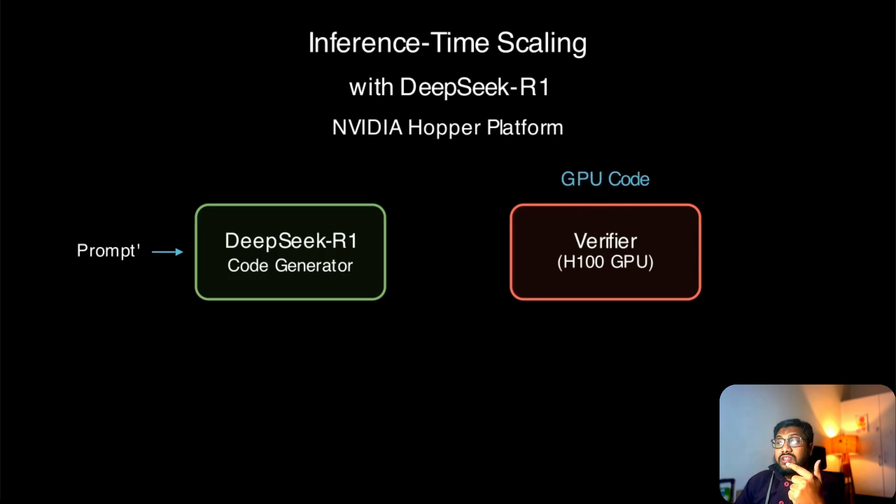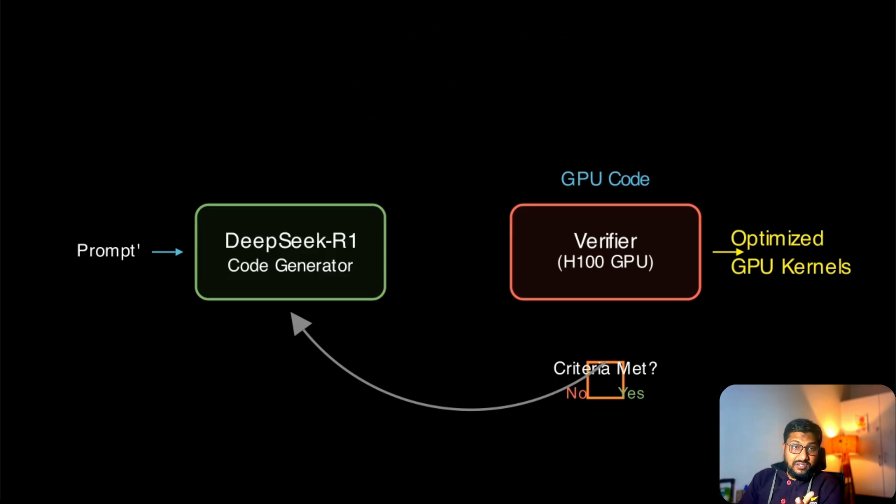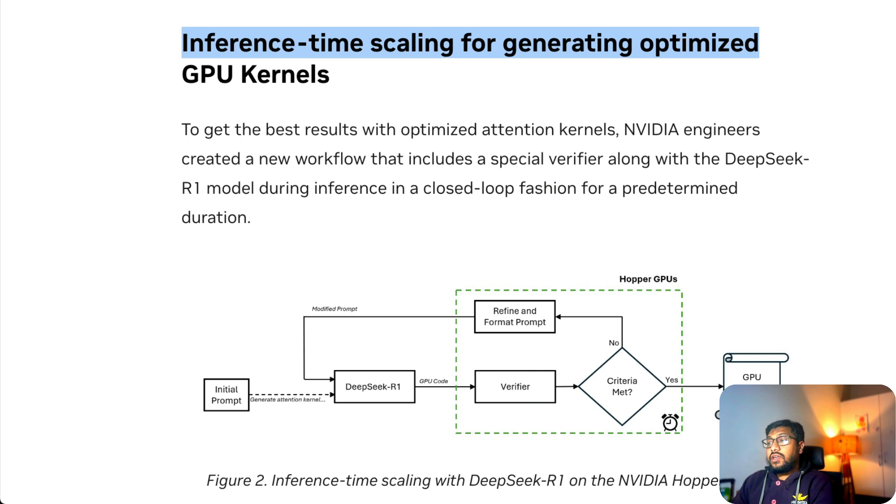The verifier basically checks if whatever the code that DeepSeek R1 creates meets the criteria: the computational efficiency, whether it is without any error, whether it runs properly, whether it fulfills the objective. If it does verify, then it goes into the GPU optimized kernel. But if it doesn't verify, then it goes back, refines the prompt with whatever it misses, creates the prompt again, formats the prompt, and gives it back to DeepSeek R1. This is the age-old feedback system that human beings have been creating forever, and this simple workflow has worked efficiently for NVIDIA engineers.